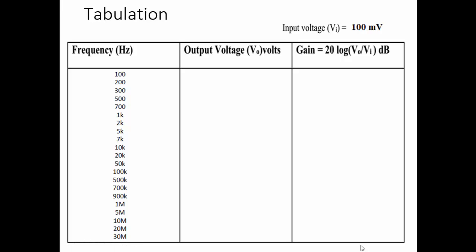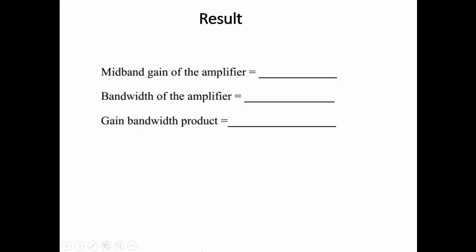The gain-bandwidth product is the product of the gain and the bandwidth. The table records all frequency ranges, output voltage, and gain in decibels, starting from low frequency through the mid-band range up to high frequency. Finally, calculate the mid-band gain, bandwidth, and the gain-bandwidth product.